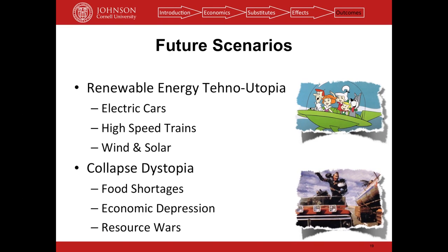What are the future scenarios? First is the renewable energy techno-utopia — the Jetsons scenario — where we all drive electric cars and travel on high-speed trains, all powered by renewable electricity from wind and solar. The other end of the spectrum is the collapse dystopia — food shortages, vastly increased food prices, and economic depression. In the U.S., 70% of the economy runs on consumer discretionary spending, so if people spend more on gasoline and food, they have less for discretionary items, creating recession. Countries vying for remaining oil could lead to resource wars.